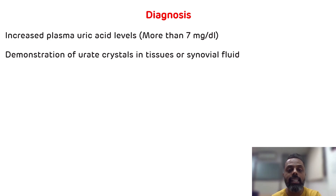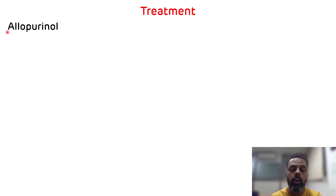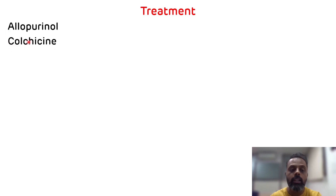Now finally we will see the treatment of gout. First, ask the patient to take a purine-free diet, reduce the intake of alcohol, and drink plenty of water. Apart from this, prescribe certain medications. First is allopurinol, which will reduce the production of uric acid by inhibiting the xanthine oxidase enzyme. Second is colchicine, which will inhibit phagocytosis. Then steroids, which inhibit the phospholipase A2 enzyme.